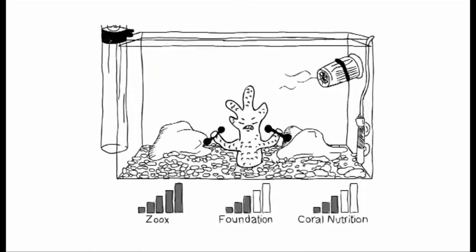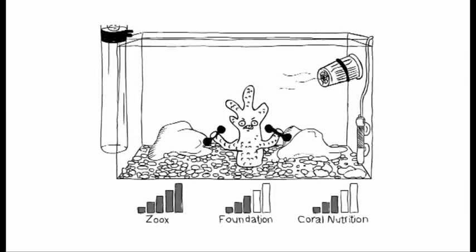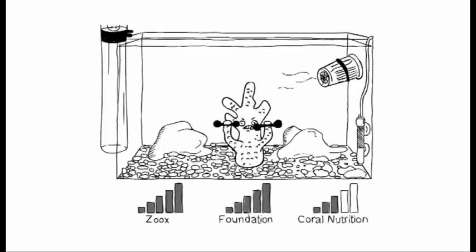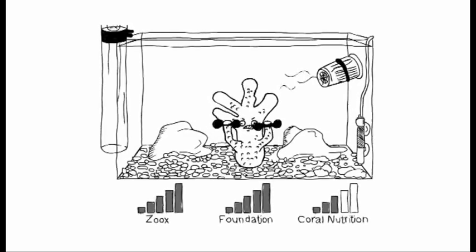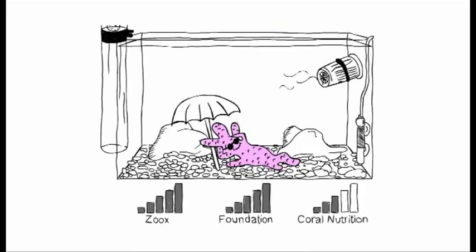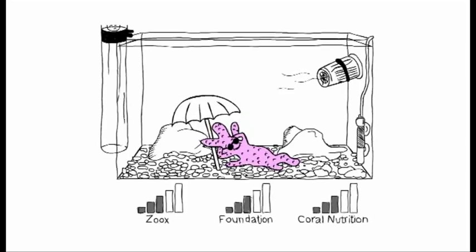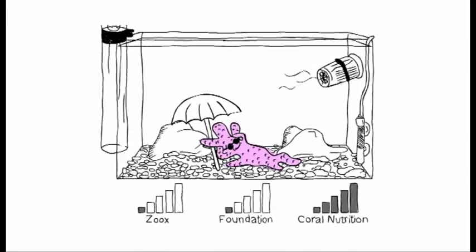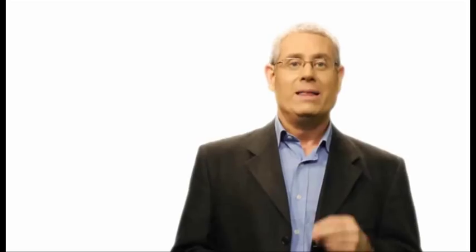Higher densities of zooxanthellae, which supply 85% of the nutrients, combined with elevated levels of Foundation elements, will support the energy requirements for accelerated growth. Since corals are only able to display their natural colors at lower densities of zooxanthellae, to avoid an energy imbalance, we must reduce growth rates by lowering the Foundation elements and increase the coral nutrients available in the water. The individual parts of the ReefCare program are coordinated to optimize the energy demands of the corals — remember, everything is interconnected.